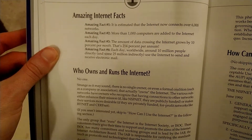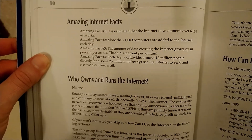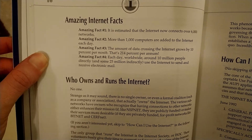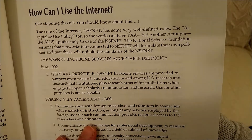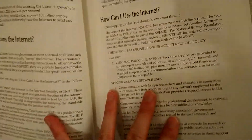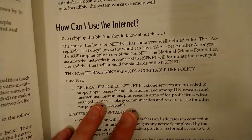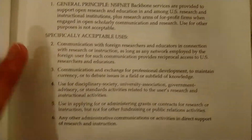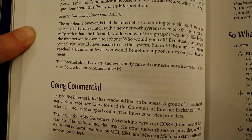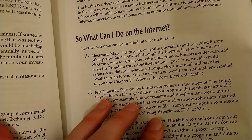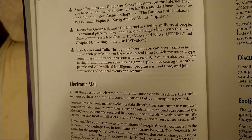Amazing internet facts: more than 1,000 computers are added to the internet each day. Data crossing the internet grows by 10% each month. NSFnet has some well-defined rules — an acceptable use policy. NSFnet was and/or is the core of the internet. In 1991, the internet lifted its decade-old ban on business. What can I do on the internet? Mail — they already outlined this. Play games and talk?